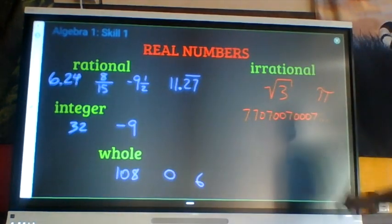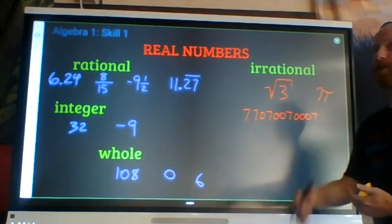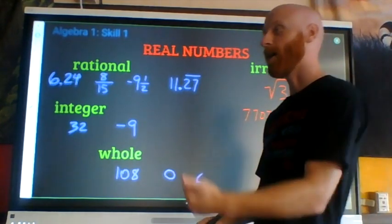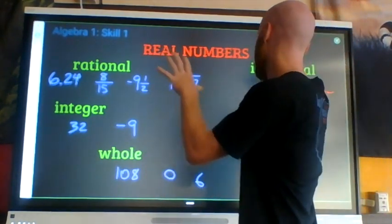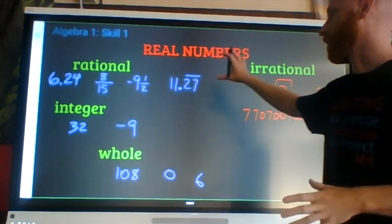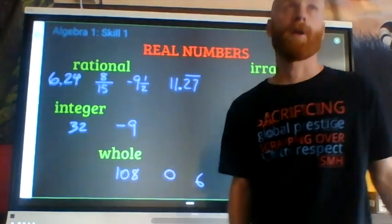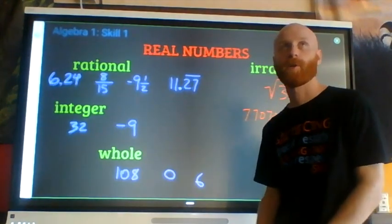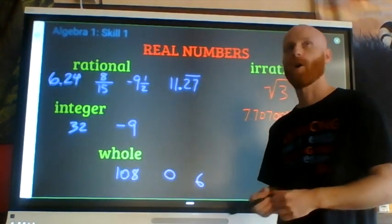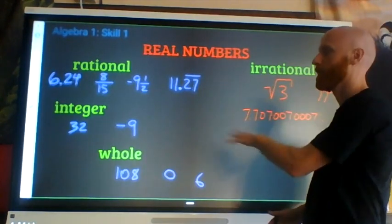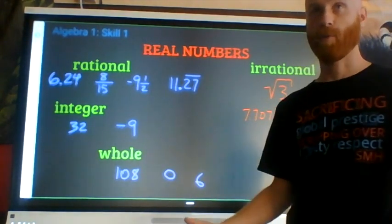And then we've got our irrational numbers, things like pi, that if they're expressed as a decimal, they do not repeat and they do not end. All of those kinds of numbers are the real number system in Algebra 1. All of your answers will be real numbers and you have to know that any one of these types are numbers that we're going to be working with.